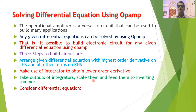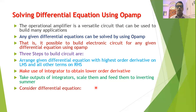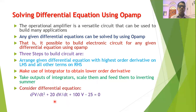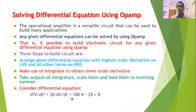To understand these three steps, we will consider an example. Suppose the given differential equation is: d²V/dt² + 20 dV/dt + 100V − 25 = 0.